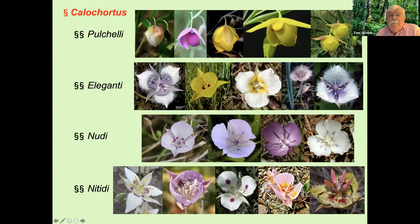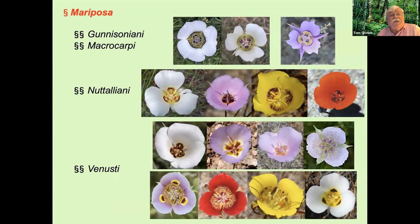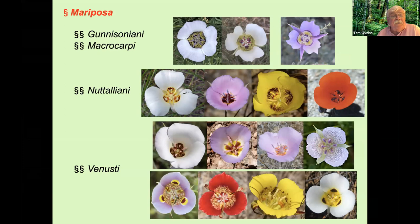Within section Mariposa, the first three subsections share glands at the base of each petal, which are depressed and surrounded by a membrane. Subsection Macrocarpi consists of a single species, Macrocarpus, with sepals much longer than the petals. Subsection Gunnisoniani consists of two species, Ambiguus and Gunnisonii, which have oblong glands, a narrow and discontinuous membrane, and petal hairs that are branched and gland-tipped. Subsection Nuttalliani has circular glands with a broad continuous membrane and unbranched petal hairs, including Nuttallii, Invenustus, Concolor, Kennedyi, Bruneaunis, Panamintensis, Excavatus, Aureus, and Clavatus.